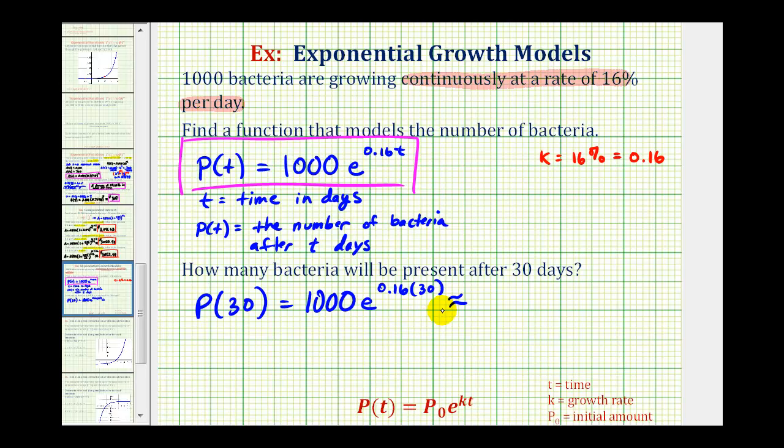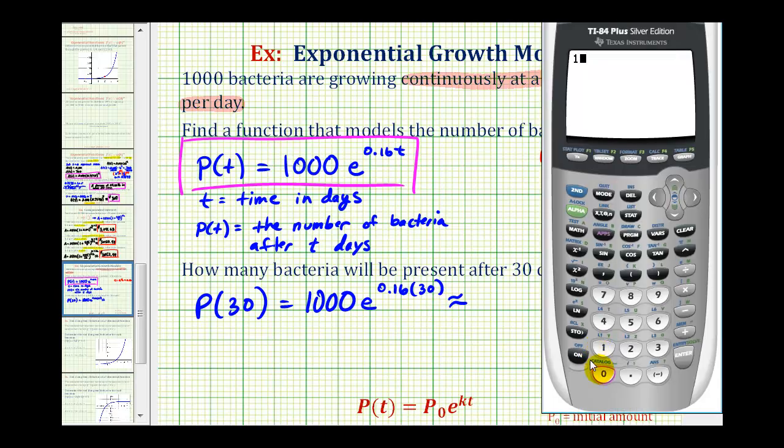Which we'll need the calculator to evaluate. So we have 1,000, and for this calculator, if I press second natural log, or second ln, it brings up e raised to the power, and now we just need to enter 0.16 times 30, close parenthesis, press enter.